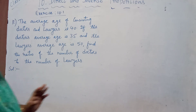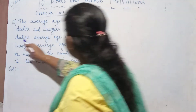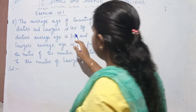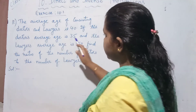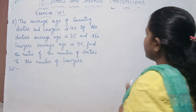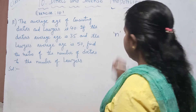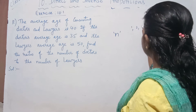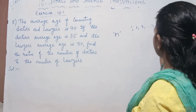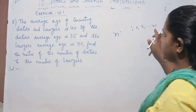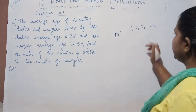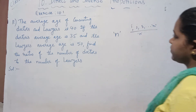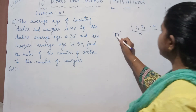The average age of doctors is 35, but we don't know how many doctors there are. Suppose the total number of doctors is n. For these n doctors we write their ages — age of the first doctor, second doctor, third doctor, up to n doctors. n could be 10 doctors, 20 doctors, or any number. You take the sum of their ages divided by the total n. So we take the number of doctors as n.